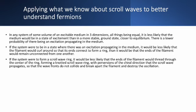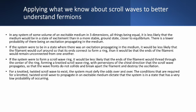If the system were to form a scroll wave ring, it would still be less likely that the ends of the filament would thread through the center of the ring, forming a knotted scroll wave ring with chirality perversions. So even if the medium were in a state of oscillation rather than a more stable state of equilibrium, and even if that oscillation were to form a scroll wave ring instead of a linear scroll wave, it would still be less probable that the oscillation would become a knotted, twisted scroll wave ring. For a knotted, twisted scroll wave ring to exist, the system must beat the odds over and over again. The conditions required for a knotted, twisted scroll wave to propagate in an excitable medium dictate that the system is in a state that has a very low probability of occurring.